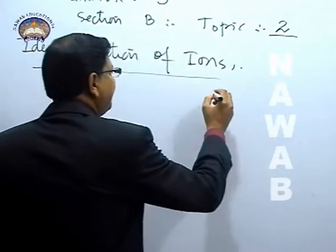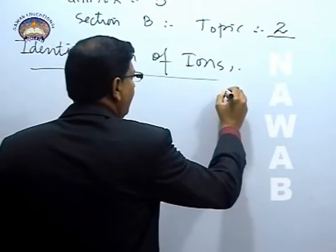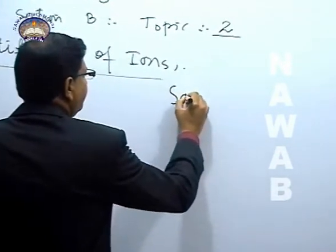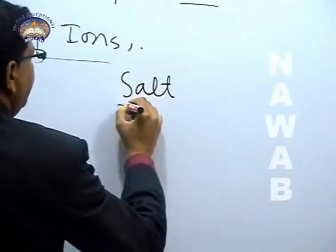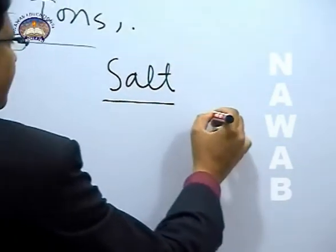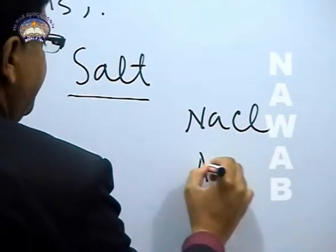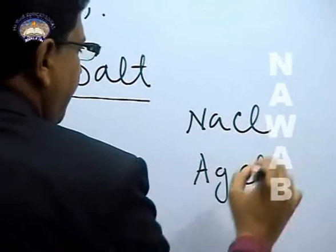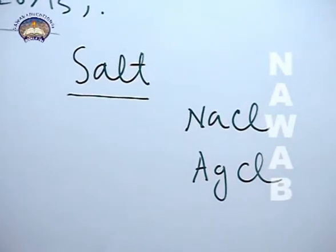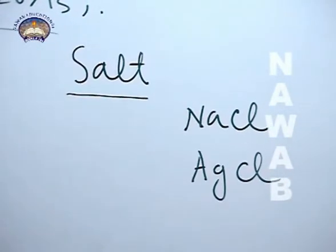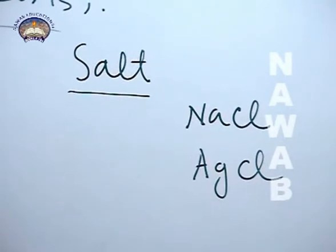Identification of ions means this is related to salt. How? When we write the formula of a salt - we have talked about it - so see, NaCl is written or studied, and AgCl. So this means that the salts which we have discussed before consist of two things. There are two ions inside them.